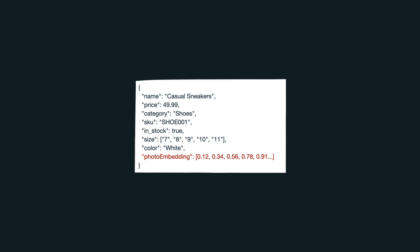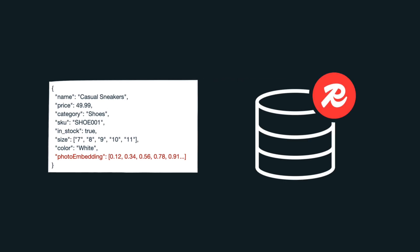Behind the scenes, visual search occurs in several key stages, starting with the transformation of raw images into embeddings. Before any search can take place, we need to use an embedding model to vectorize all images we want our system to search through. In e-commerce, for example, those will be the photographs of the products. These embeddings, along with associated metadata such as product IDs, descriptions, and URLs, are stored in a vector database.